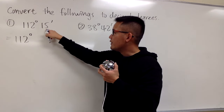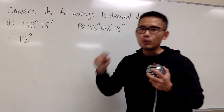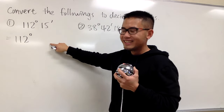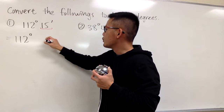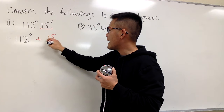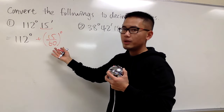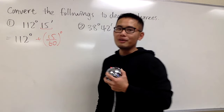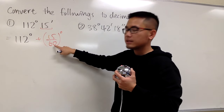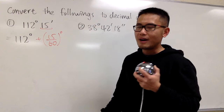For the 15 minutes, we have to remember that there are 60 minutes in 1 degree. If you want to change minutes into degrees, you take this value — the 15 — and divide it by 60. That will give you the degrees. Then we add it with 112. To change from minutes to degrees, you divide by 60.